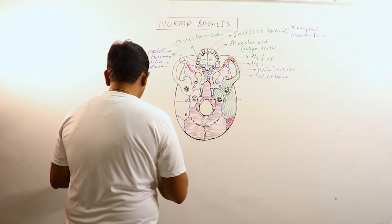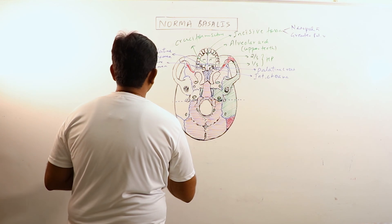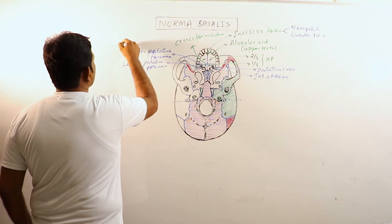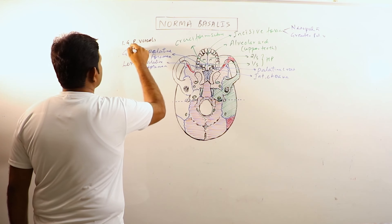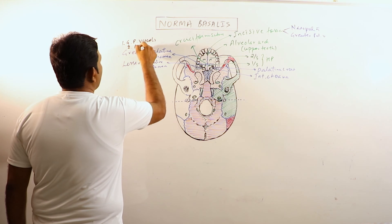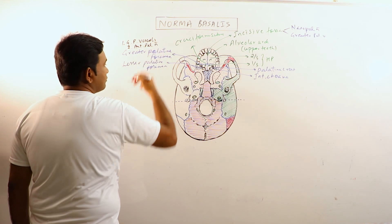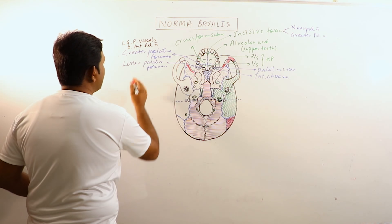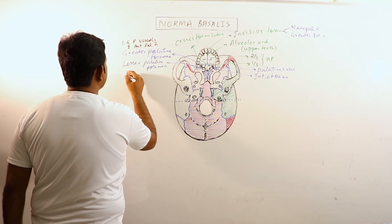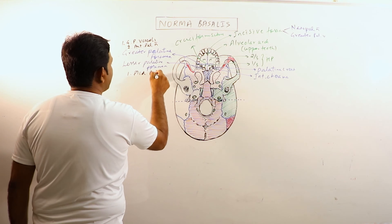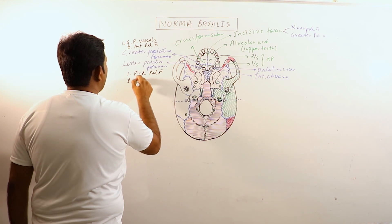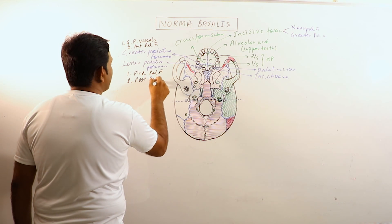Greater palatine foramen transmits greater palatine vessels and anterior palatine nerve while the lesser palatine foramina transmit middle palatine nerve and posterior palatine nerve.